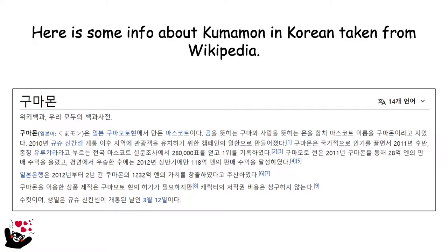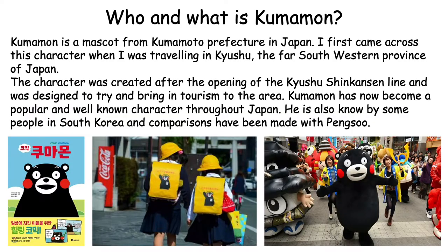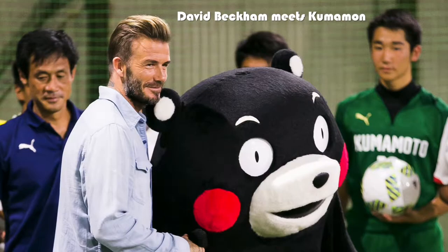If you don't know who Kumamon is, I've put some information in Korean and also in English into the PPT. Just to describe this briefly, Kumamon is a mascot from Japan for Kumamoto Prefecture in Kyushu. He was used as a kind of tourism grab to get people to come and visit the area, but he's become famous all over the world.